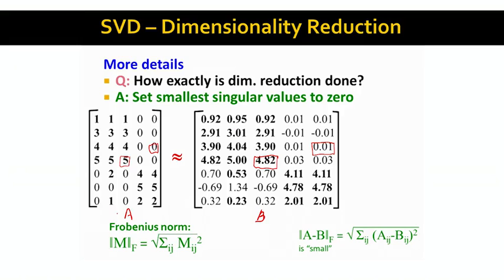What we basically did: we took our original matrix A, did SVD and were able to exactly reconstruct it. Then we removed the last column from U and the last column from V, and removed the smallest singular value. Now representing everything as a smaller set of matrices, multiplying the three matrices together gives a new matrix very similar to the original A. We can quantify the similarity of two matrices using the Frobenius norm, which is simply the sum of squared differences of their entries — take the difference of each entry, sum them up squared, and take the square root.